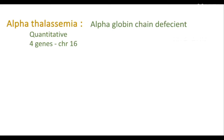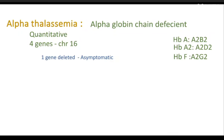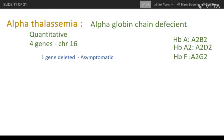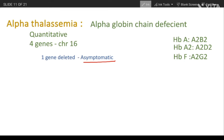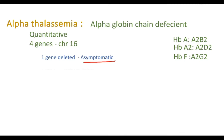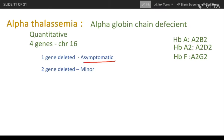Now we will see what happens when these four genes are deficient. If one gene is deleted, the patient is asymptomatic and doesn't show any symptoms. If two genes are mutated, it causes minor alpha thalassemia, and mild anemia is observed in these patients.